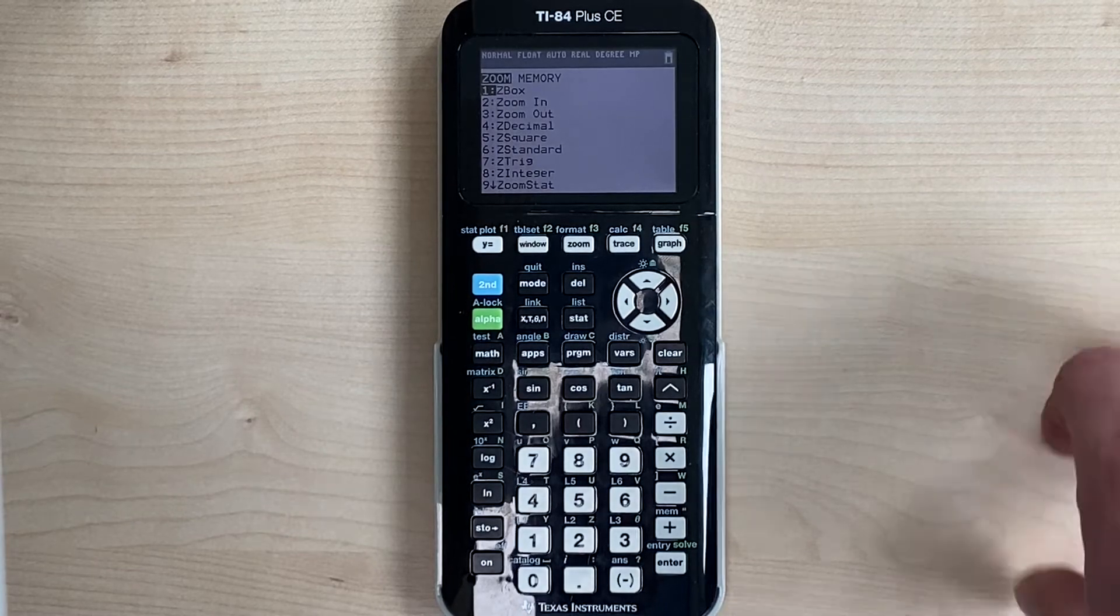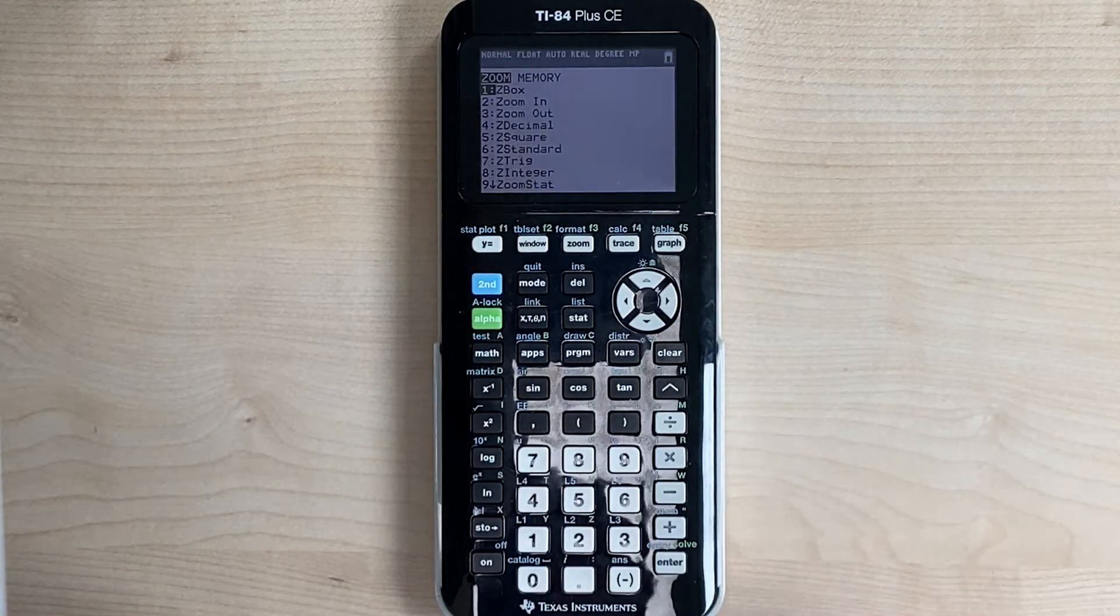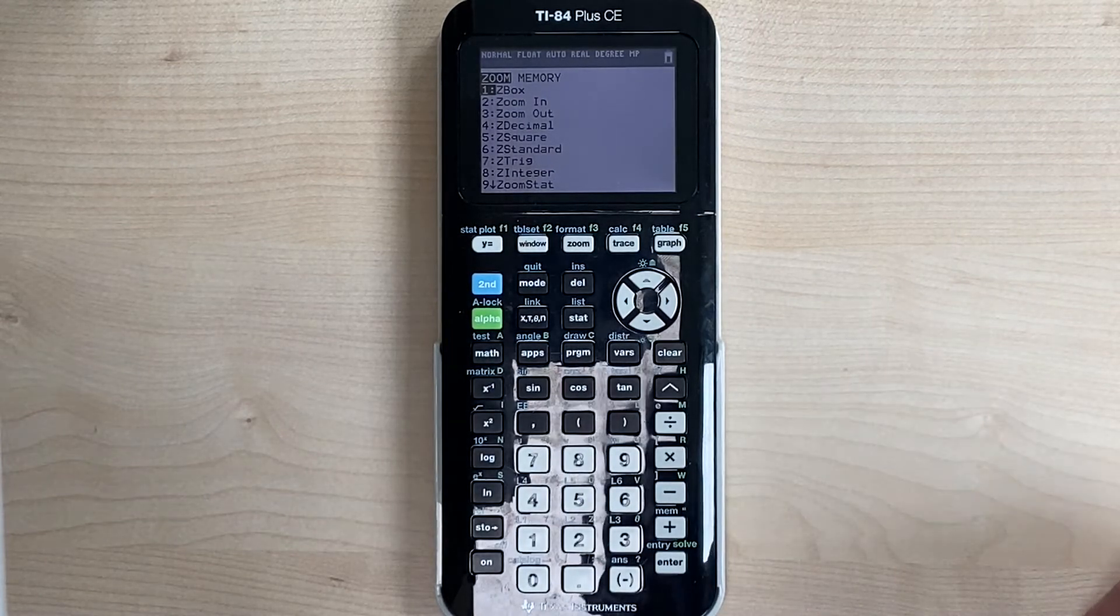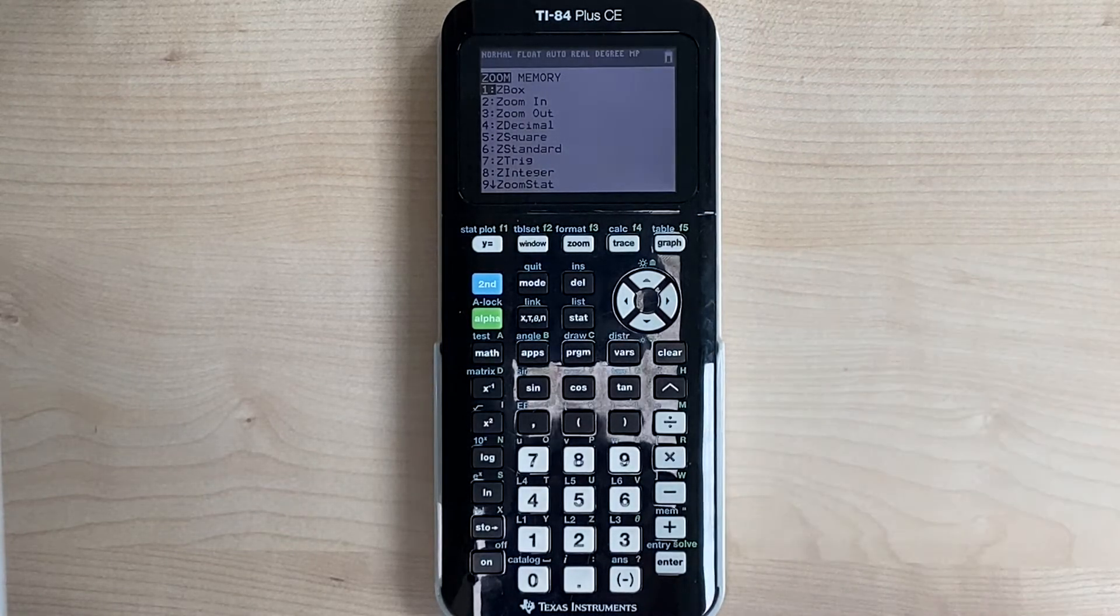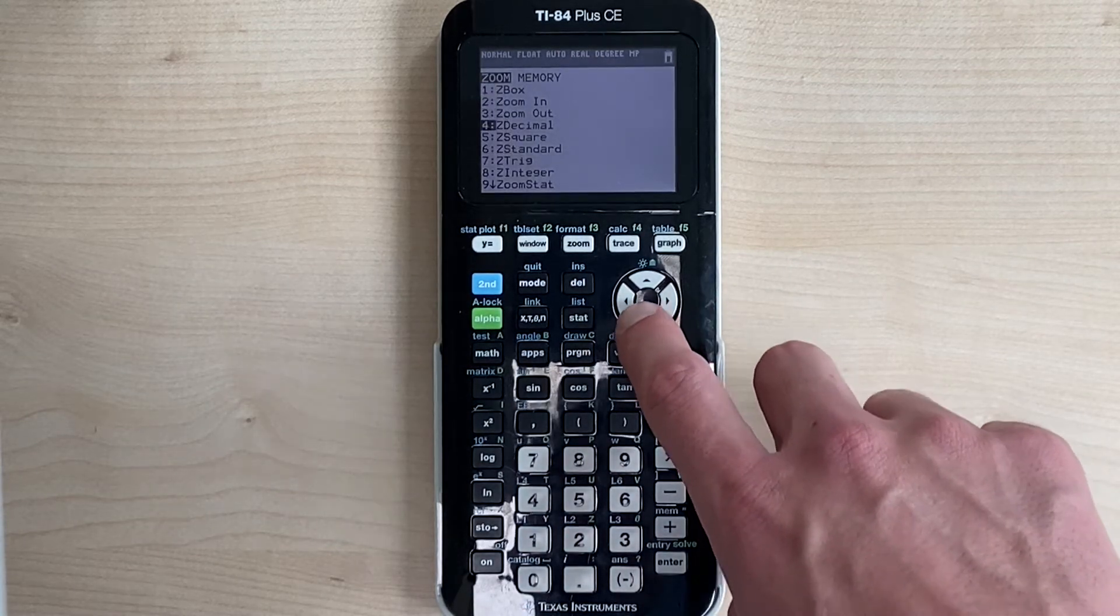The number one option that you're going to choose is z-standard. So what z-standard is, is it takes you back to your standard zoom, which is negative 10 to positive 10 on both the x and the y-axis. So you can go down until you get to the 6, or you can hit the numeral 6 on the number keypad.